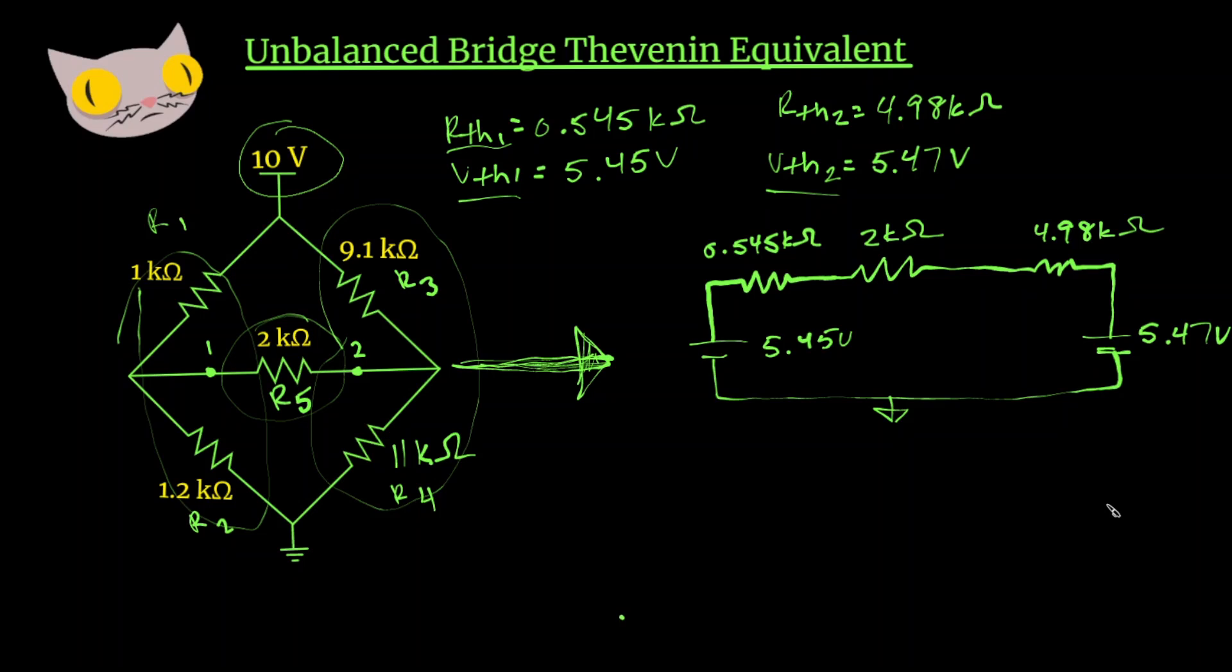Now let's see if we can find the current through R5, through our 2k ohm resistor. So our current is going to equal V over R. So our total voltage is going to be 5.47 volts minus 5.45 volts.